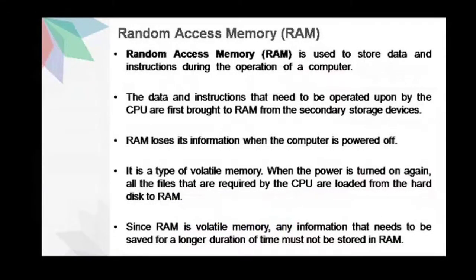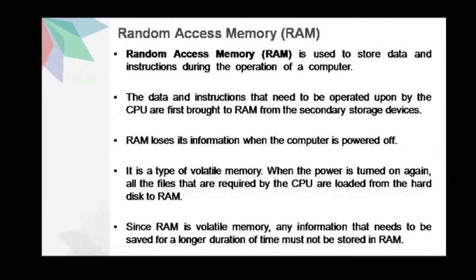Random access memory or RAM is used to store data and instructions during the operation of a computer. The data and instructions that need to be operated upon by the CPU are first brought to RAM from the secondary storage devices. RAM loses its information when the computer is powered off — this is a type of volatile memory. When the power is turned on again, all the files that are required by the CPU are loaded from the hard disk through RAM.